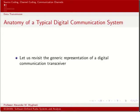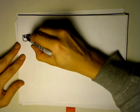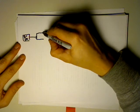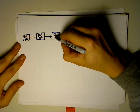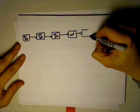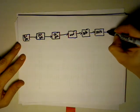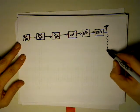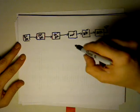Let's revisit what our typical digital communication system looks like. We have our binary source, fed into our source encoder, which is then fed into our channel encoder, which is then fed into our modulator. It gets converted into an analog signal, goes through an RF front-end, and is sent over the air or transmitted over some line. It goes through something called the channel, and is picked up by the receiver. This here is our transmitter.